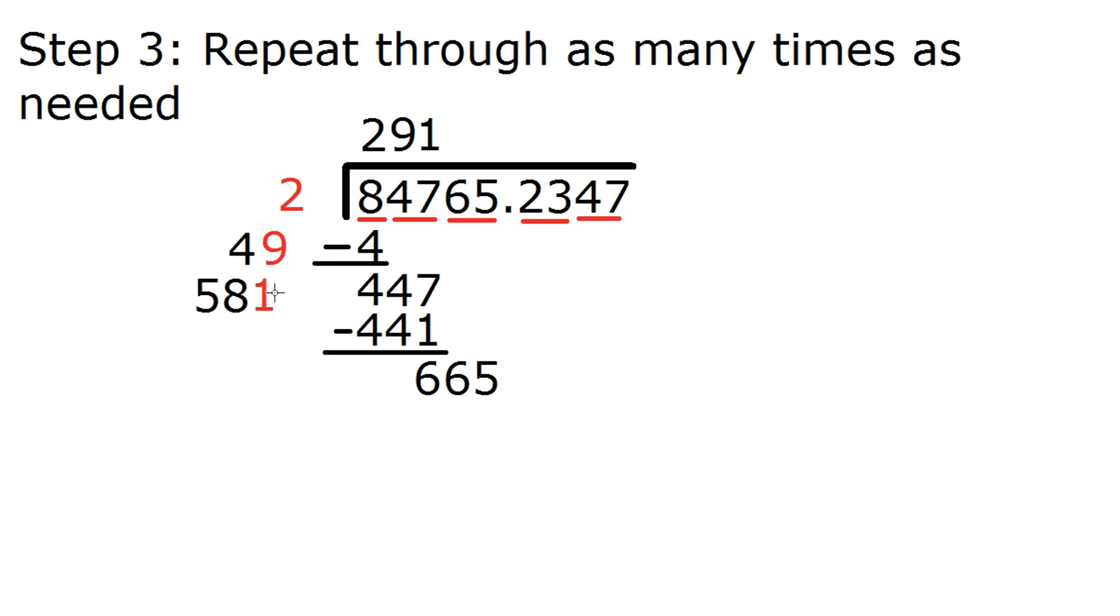Now finally, we want to multiply 581 by 1, which is just 581. So we're going to write that down here. And we'll subtract this out to see what we get. So this is going to be 84. And now you'll notice step 3 never ends, because we're assuming that the result here is going to be irrational. So we're going to get as many digits as we want. So we're going to keep repeating this process over and over until we're satisfied with our answer.